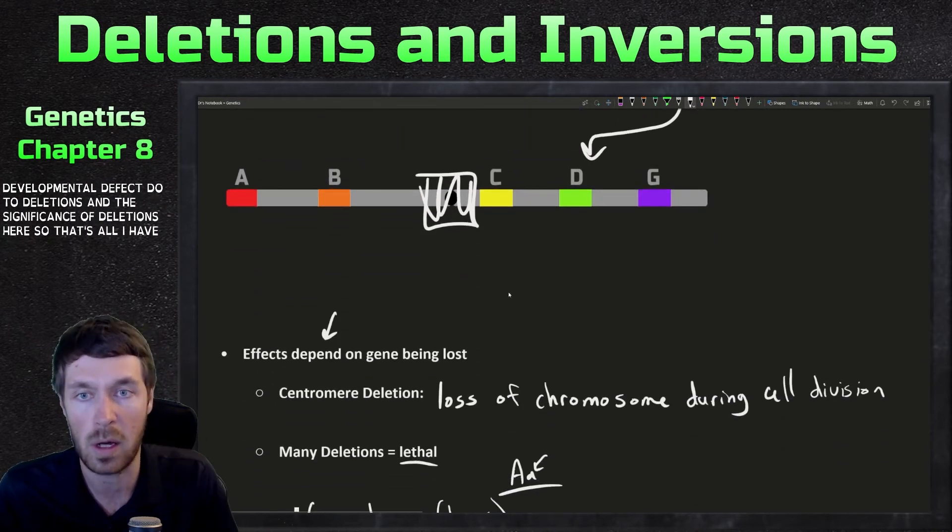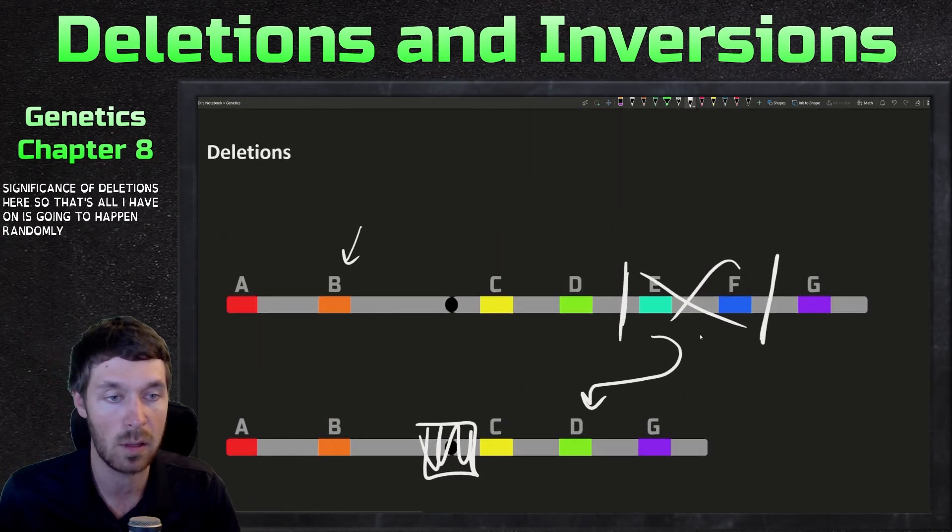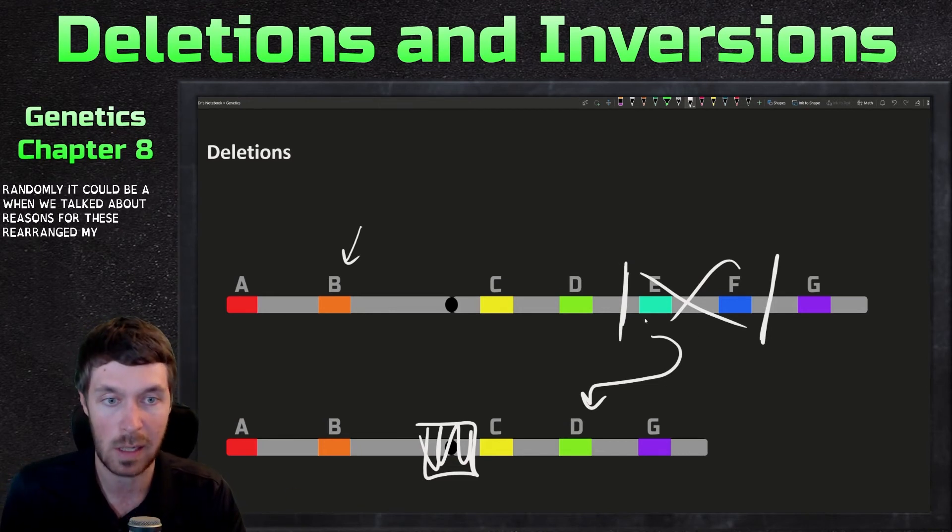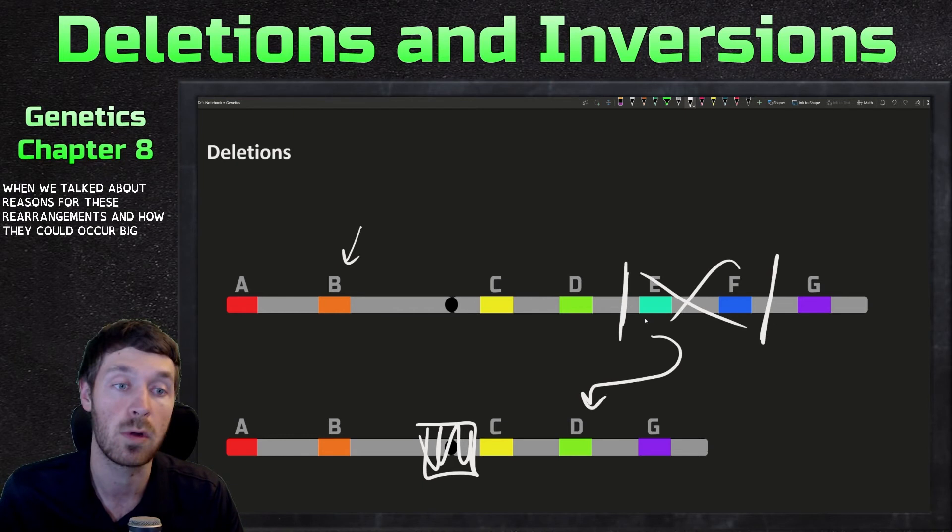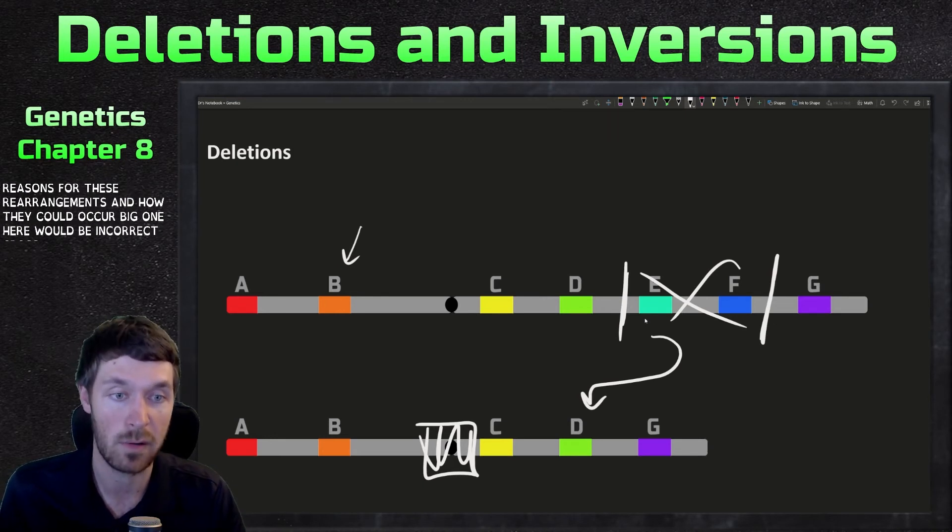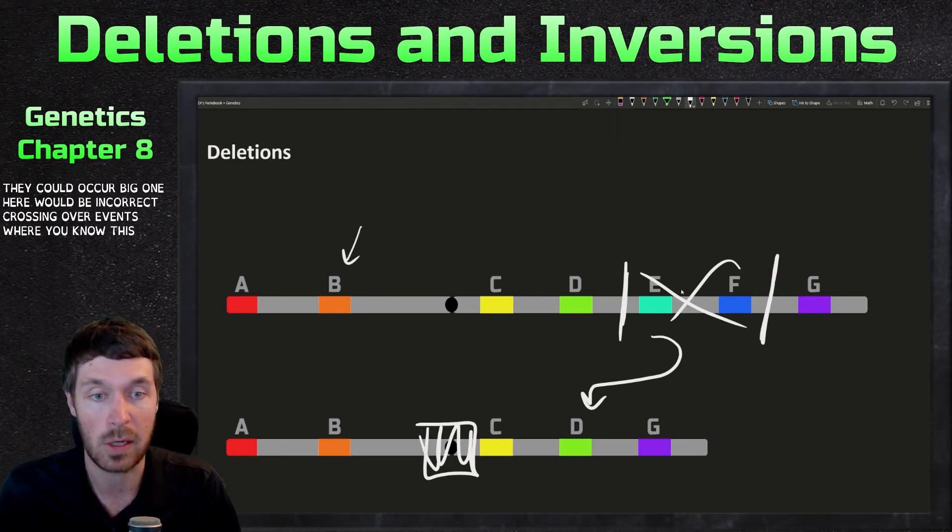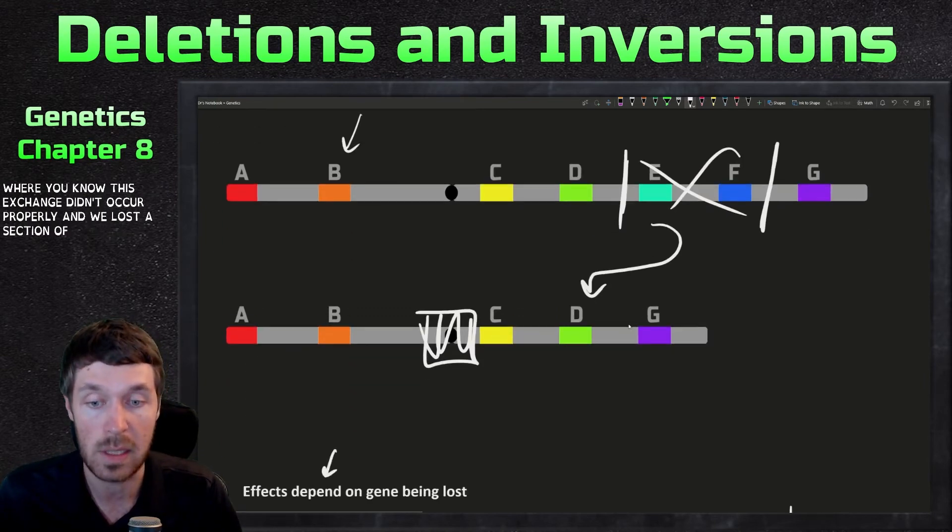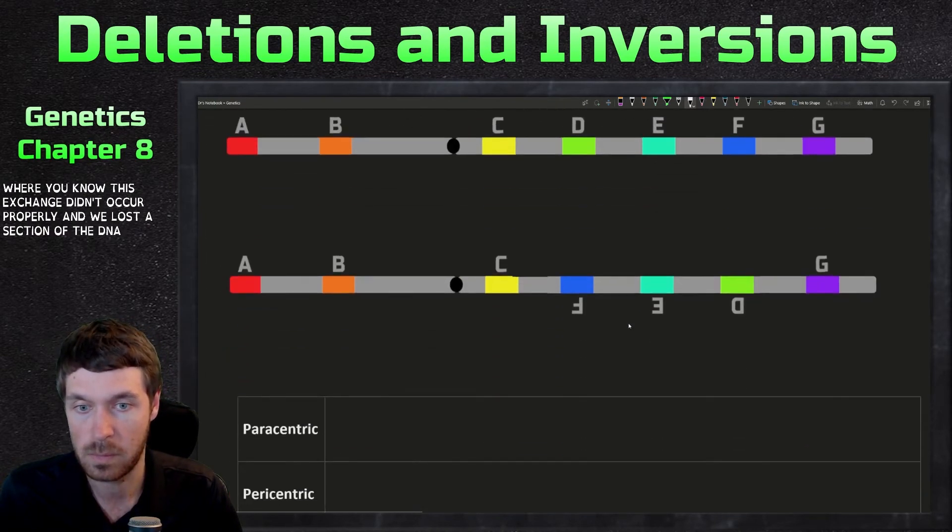So that's all I have on deletions and deletions could happen randomly. It could be, we talked about reasons for these rearrangements and how they could occur. A big one here would be incorrect crossing over events where, you know, this exchange didn't occur properly and we lost a section of the DNA.